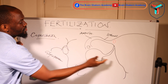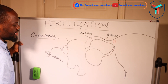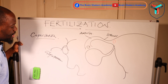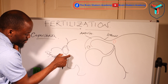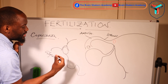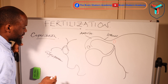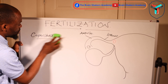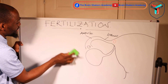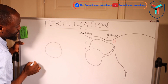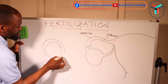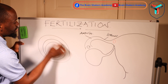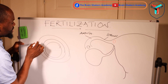The spermatozoa swims and finds the egg. When it does, it buries itself into what is called the corona radiata. The ovum is surrounded by the zona pellucida, and then the corona radiata on the outside.